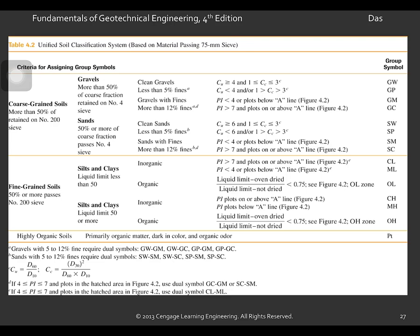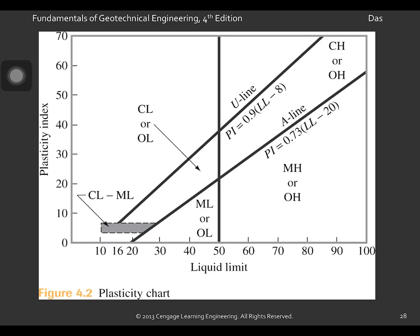We have coarse-grained soil with more than 50% retained on number 200 sieve and fine-grained soil in which 50% or more passes the number 200 sieve. And this is the plasticity chart, plotted with the liquid limit and the plasticity index. We have the A line and the U line.